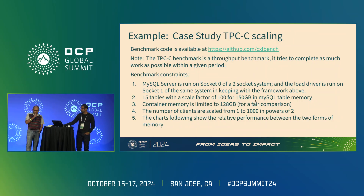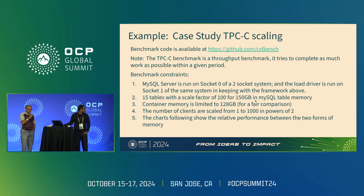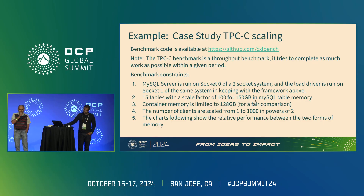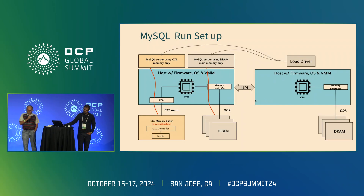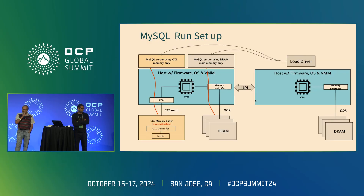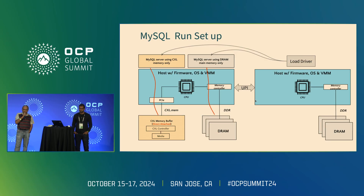The other application we look at is TPCC scaling. We are trying to keep things equivalent. The contribution we've made to CXLBench allows you to change the parameters as you want. In this particular case, keeping things equivalent and making sure everything fits inside CXL, we are doing a simple comparison between DRAM and CXL. The setup is a two-socket system — one socket has the CXL expander and that's where the database server runs, and the load driver on the second socket drives the load to the database.